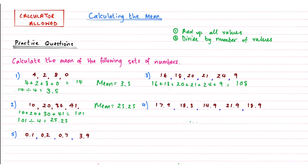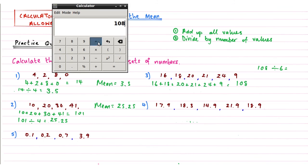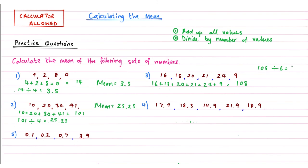And now I need to divide 108 by how many values. Let's count them: 1, 2, 3, 4, 5, 6. So 108 shared by 6, and then that gives me a mean of 18. So mean equals 18.